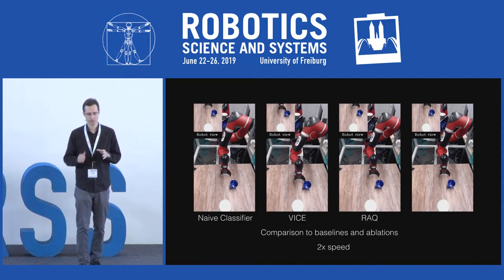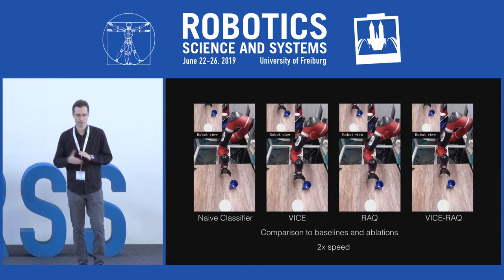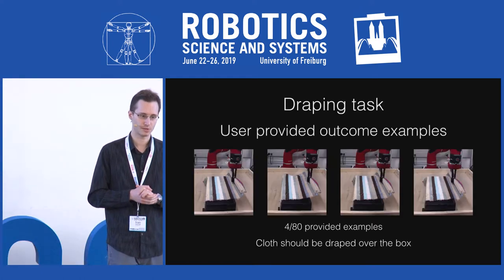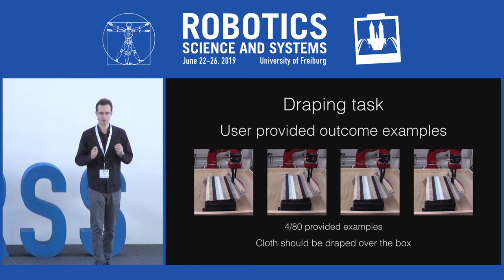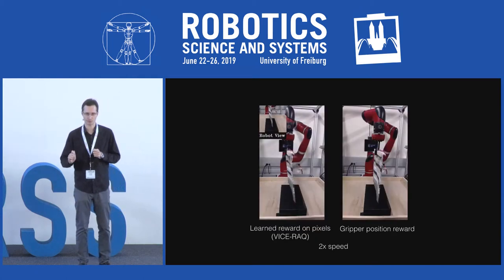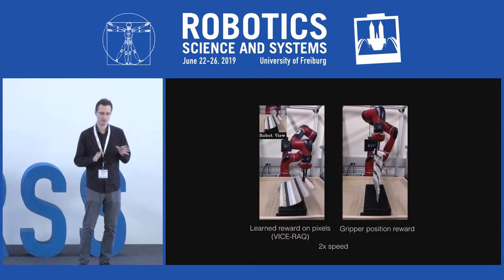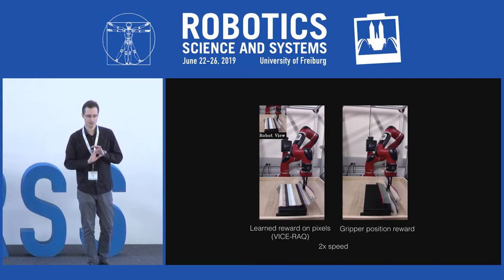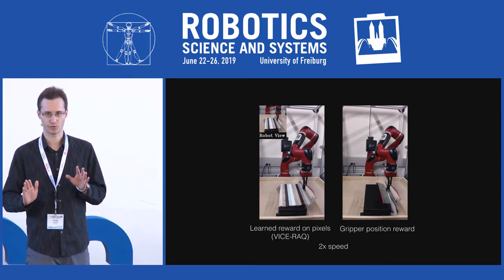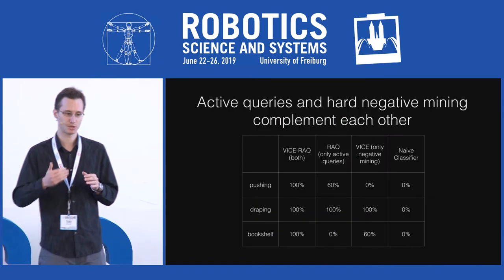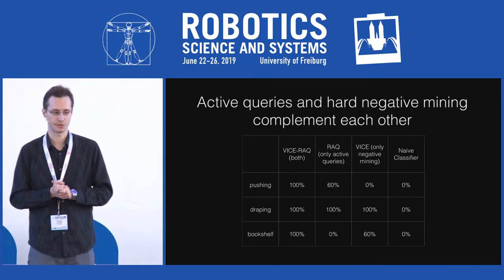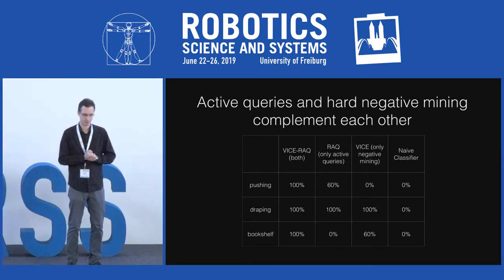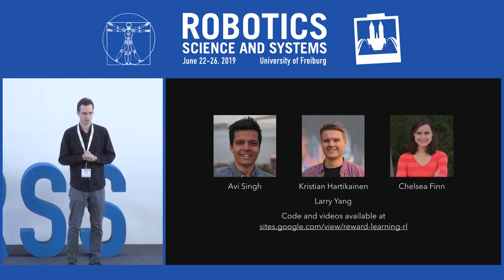Regular VICE makes some progress but takes considerably longer; active queries alone cannot make progress; and our complete method learns successfully in one hour and 15 minutes. We also test a task that truly requires image observations: draping a towel over a box, requiring the robot to watch for wrinkles. We verify this requires image pixels by giving the robot only the final wrist position — it fails, confirming it must watch the towel during draping. Across all three tasks tested, VICE-RAG achieves 100% success rate while the naive classifier never succeeds.